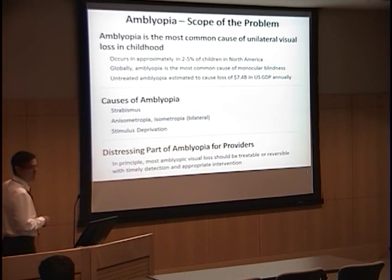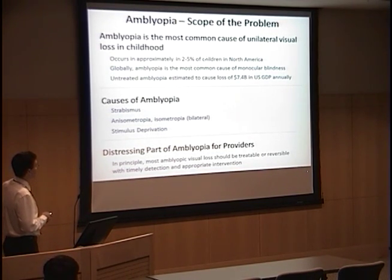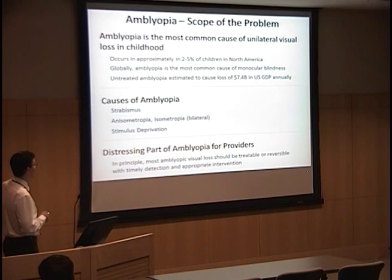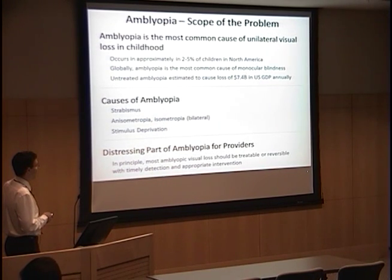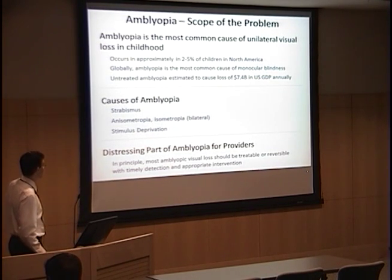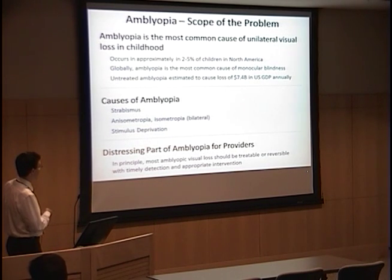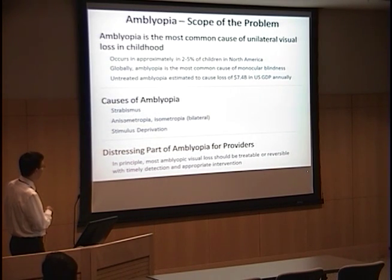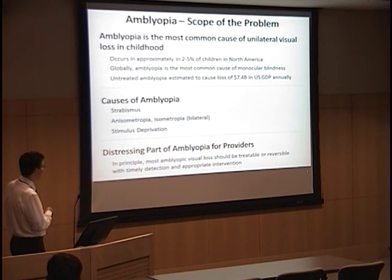Amblyopia is a big problem. It is the most common cause of unilateral vision loss in childhood. It occurs in a significant number of children, with estimates ranging up to 5% of children in North America. It's the most common cause of monocular blindness globally, and untreated amblyopia is estimated to cause over $7 billion in loss of U.S. gross domestic product annually. The major causes, in order of decreasing frequency, are strabismus, followed by anisometropia, or relatively large refractive errors which can cause bilateral amblyopia, and stimulus deprivation.